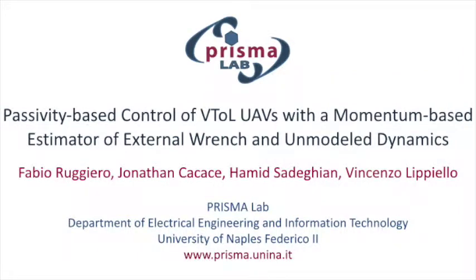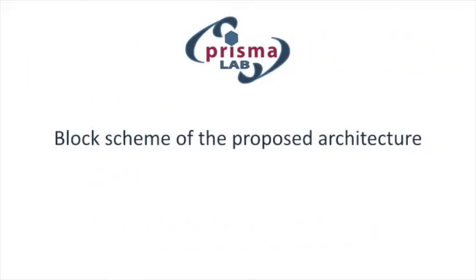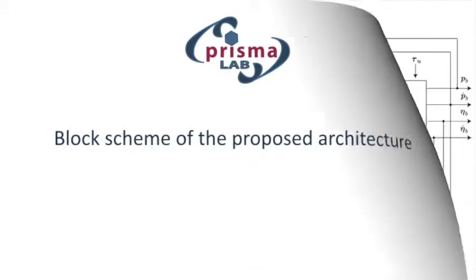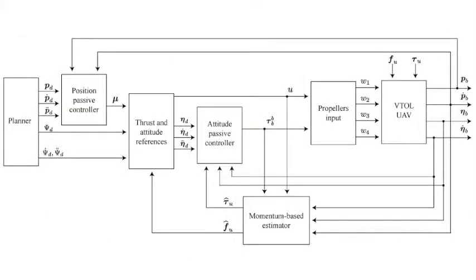A passivity-based control of a UAV is presented. The controller does not rely upon exact cancellation of nonlinearities, conferring in this way some robust properties to the attitude tracking part.